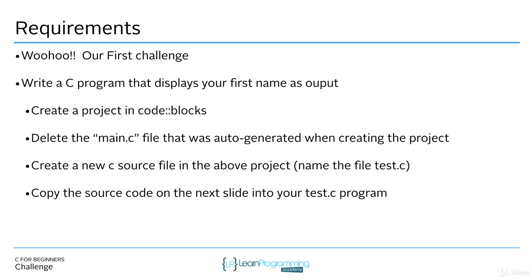You're going to write a C program that displays your first name as output. That's the requirements — that's what I want you to do. In order to complete this task and complete this challenge, you're going to need to do the following things. You're going to first have to create a project in Code Blocks, and I've demonstrated how you can do that, so you should be able to do that.